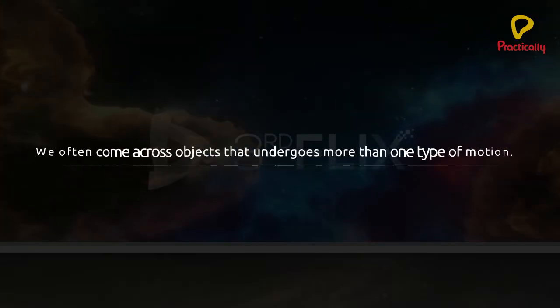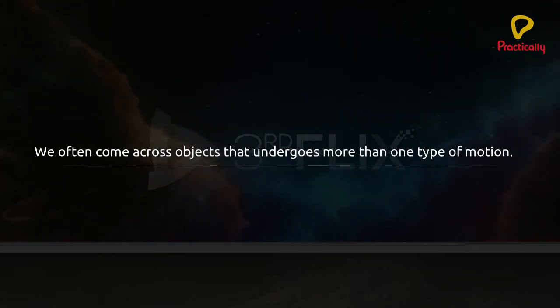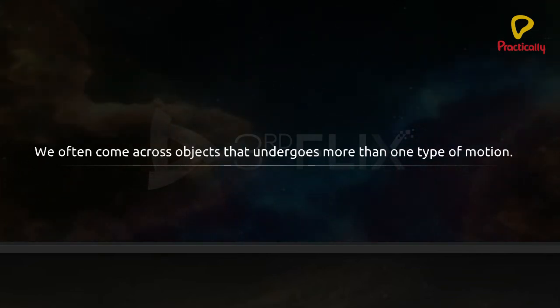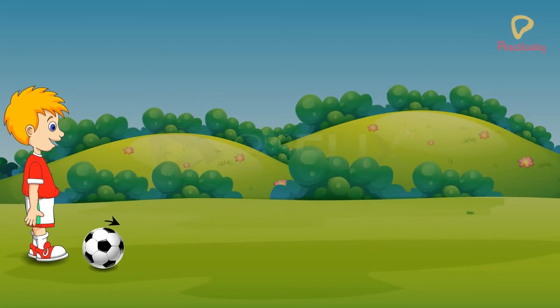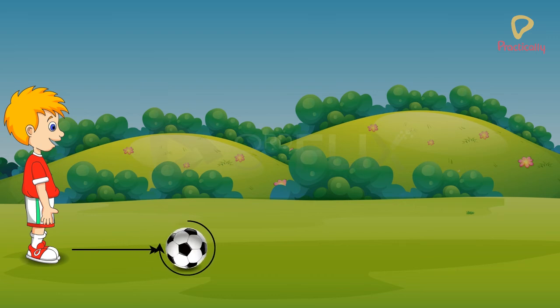We often come across objects that undergo more than one type of motion. Observe a ball rolling on the floor. The ball as a whole moves from one point to another on a straight line. It is in rectilinear motion.